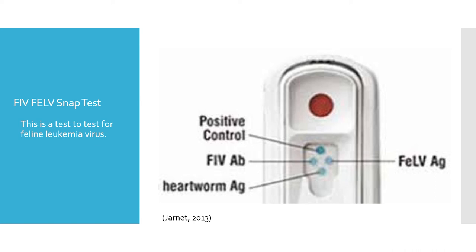FIV/FELV snap test. This test tests for feline leukemia virus. It is used during examination if the cat has shown symptoms or has come into contact with a cat that may have it. In light of new disease prevalence data and epidemiological evidence, FIV testing may need to be revised, as the test cannot distinguish antibodies from those infected through vaccination or derived from maternal antibodies.